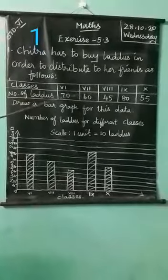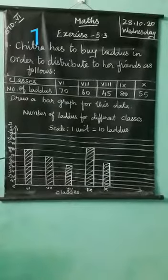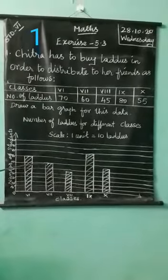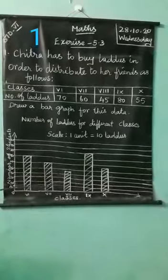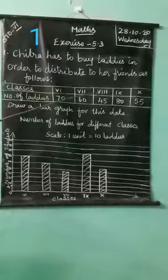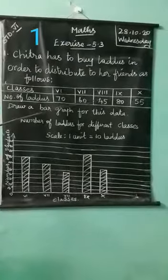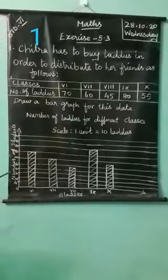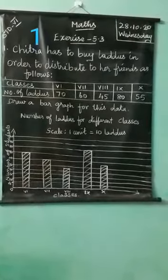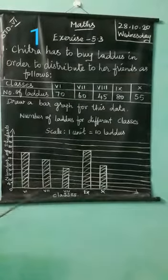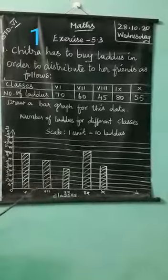7th standard — how many laddoos are distributed? 60 laddoos. 60 is here, so we draw a bar up to 60. Then 8th standard — how many laddoos are distributed? 45 laddoos. 40 is here, then we measure up to 45. We will draw a bar diagram at 45.